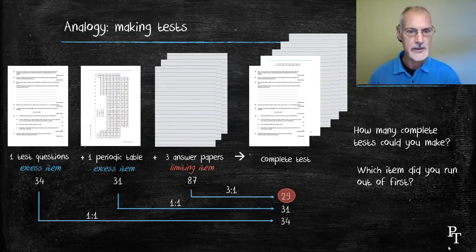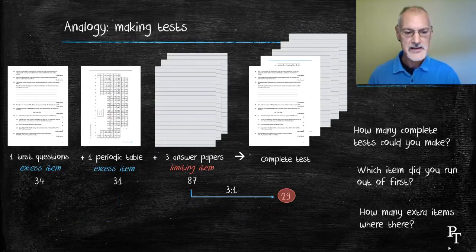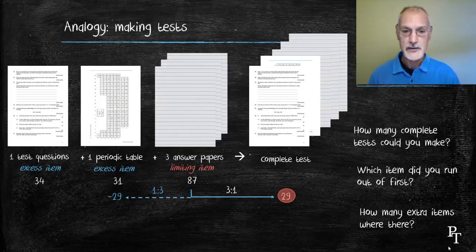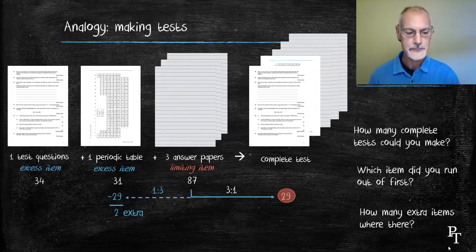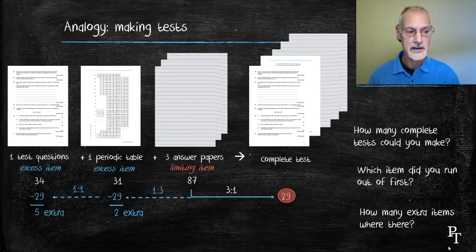How many extra items do I have? Well, focusing just on my limiting item for now, 87 answer papers would require 29 periodic tables because there's a three-to-one ratio between the two of them. Being that I'm given 31 but I require 29, there would be two left over. Similarly, there's one periodic table for every test question in a one-to-one ratio. So if I require 29 periodic tables, I also would require 29 test questions, leaving me five extra.